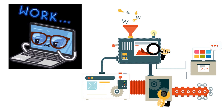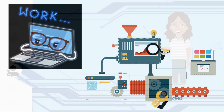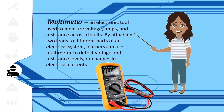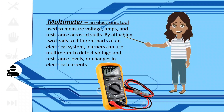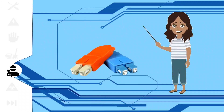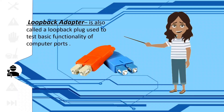And the last category of hardware tools — we have diagnostic tools. These are tools used for testing computer hardware to check for its functionality. Multimeter is an electronic tool used to measure voltage, ohms, and resistance across circuits by attaching two leads to different parts of an electrical system. Learners can use a multimeter to detect voltage and resistance levels or changes in electrical currents. Loopback adapter, also called a loopback plug, is used to test the basic functionality of computer ports.